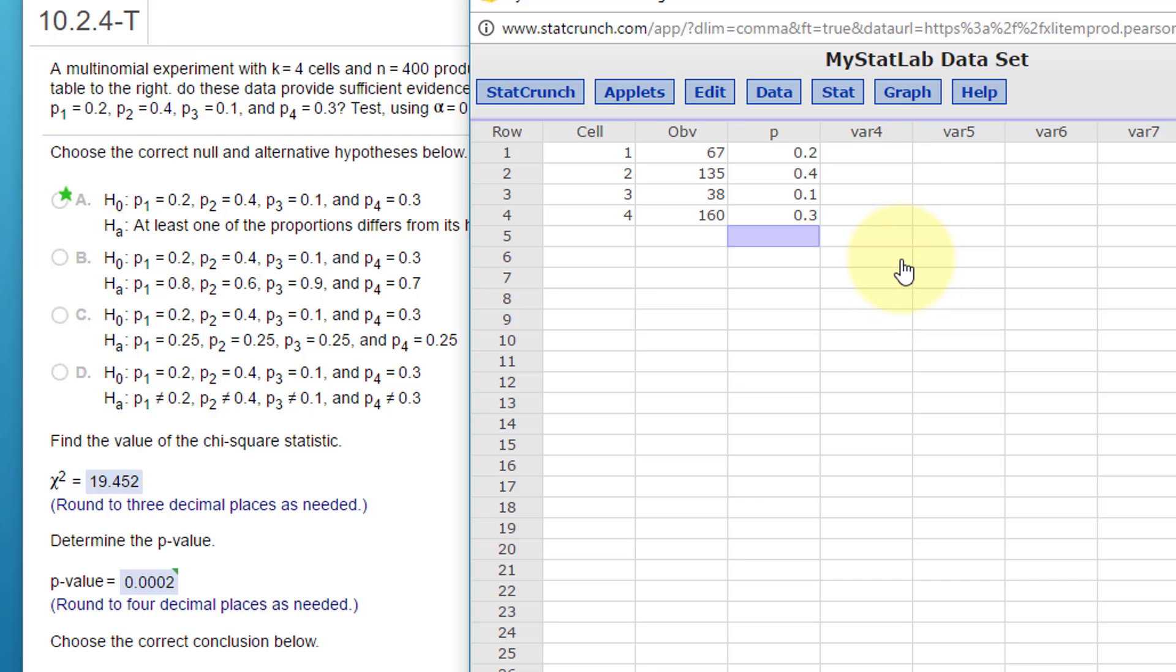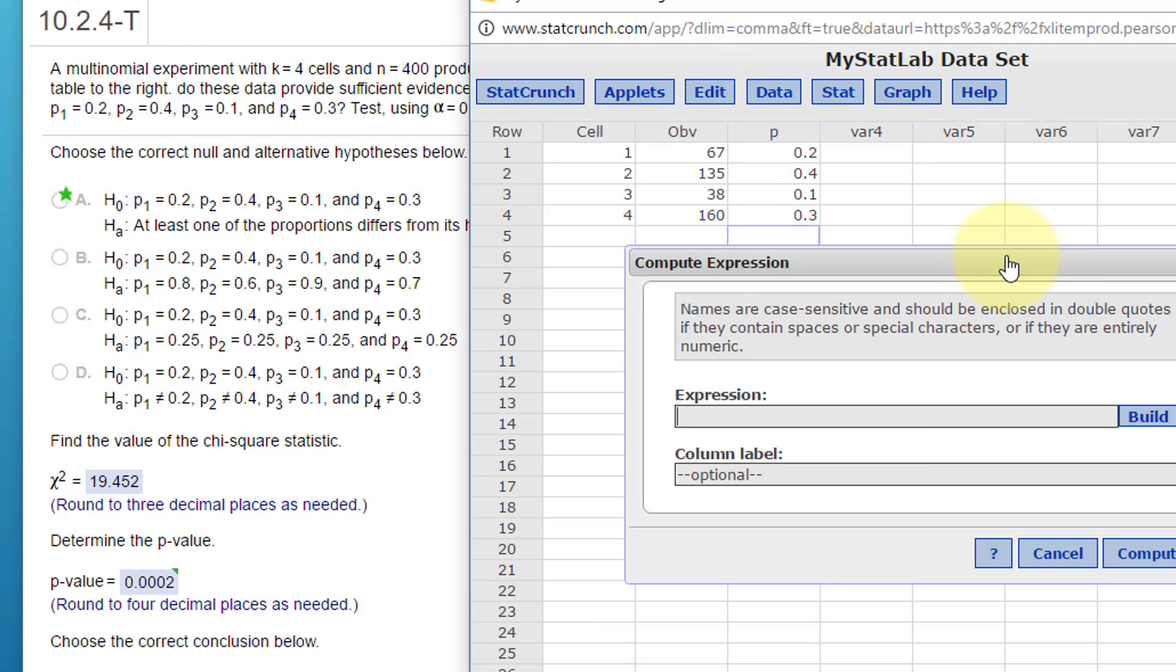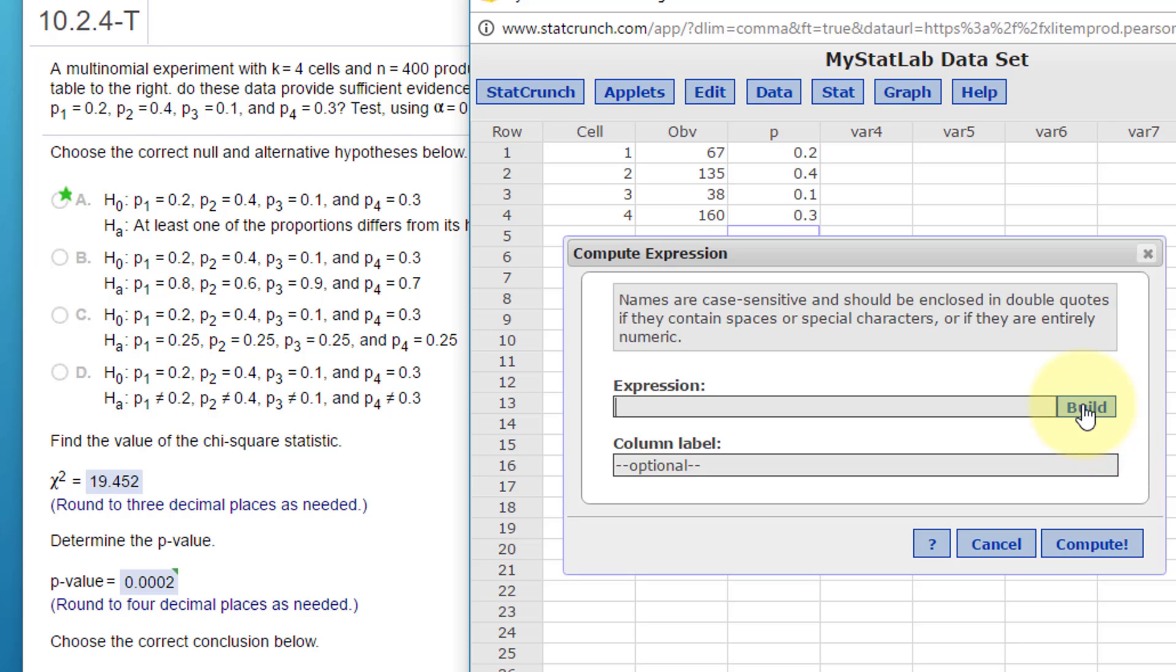I need my expected counts. We're going to use Data, Compute, Expression to do this. Click on the build and I want to take my proportions, multiply them times the count total which is 400 and click OK.